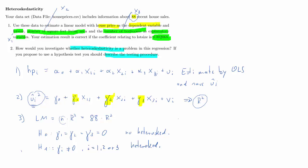We reject the null hypothesis if the calculated test statistic exceeds the critical value. The test statistic follows a chi-square distribution with three degrees of freedom, because we test for three restrictions. This test is valid asymptotically, for sufficiently large sample sizes — whether 88 is sufficiently large is not entirely obvious, but it's the data we have.